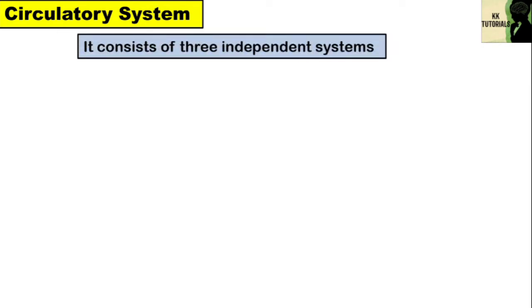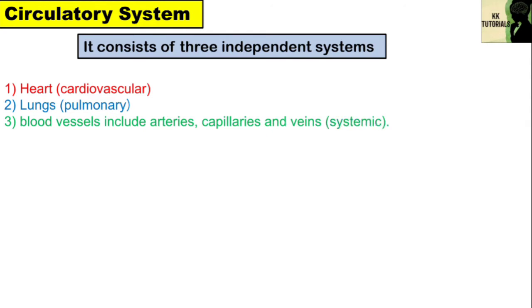Circulatory system, also called cardiovascular system, consists of three independent systems: heart, lungs, and blood vessels, which includes arteries, capillaries, and veins.